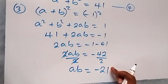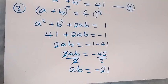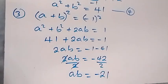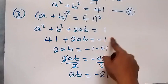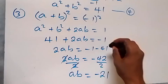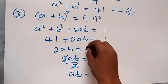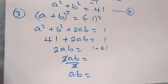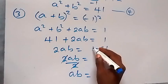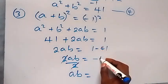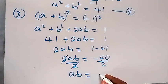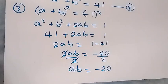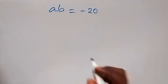Sorry, a correction here: (minus 1) squared is plus 1, not minus 1. So the equation should be 41 plus 2ab equals 1, which gives 2ab equals 1 minus 41, that is minus 40. Dividing both sides by 2, we get ab equals minus 20.